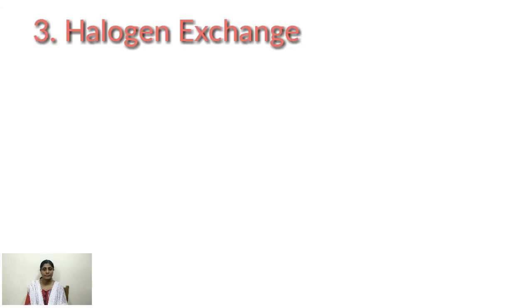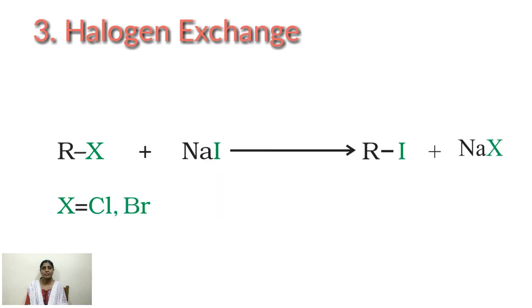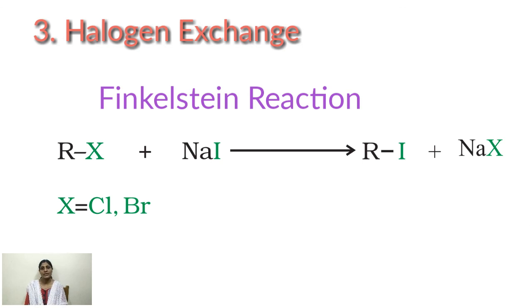Third one, halogen exchange. Alkyl iodide can be prepared by the reaction of alkyl chloride or alkyl bromide with sodium iodide in dry acetone. This reaction is known as Finkelstein reaction. RX plus NaI in dry acetone, you are getting RI plus NaX, alkyl iodide. Here the exchange of X and iodine is taking place, so you are getting RI, alkyl iodide. This NaX precipitates in dry acetone. We can increase the forward reaction according to Le Chatelier's principle.